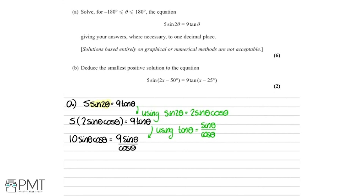Now I want to get rid of the fraction, so I'm going to multiply both sides by cosθ. That leaves us with 10sinθcos²θ = 9sinθ.